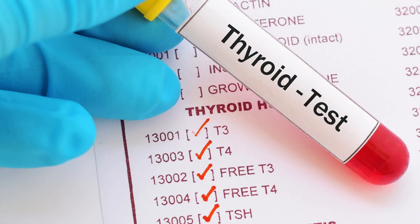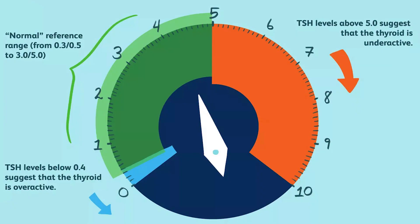Diagnosis is straightforward: a blood test measuring T3, T4, and TSH. If TSH is high and T3/T4 are low, it confirms the thyroid is underactive. Treatment is equally simple — thyroxine tablets supplement the hormone level. Repeated monitoring of TSH levels is required during follow-up.